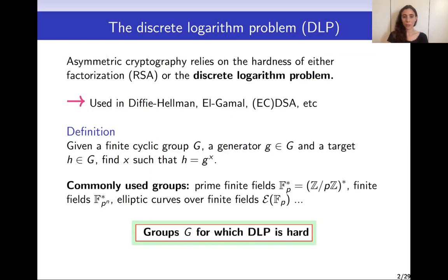The definition goes as follows. Given a finite cyclic group G, a generator G of this group, and a target element H of the group G, we want to find the exponent X such that G to the X is equal to the target element H. For cryptographic purposes we want the group G chosen so that DLP is as hard as possible. Commonly used groups are prime finite fields, finite fields, or elliptic curves over finite fields.